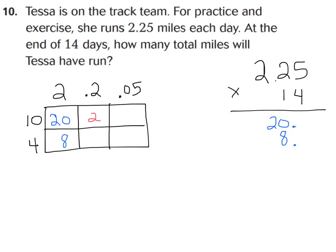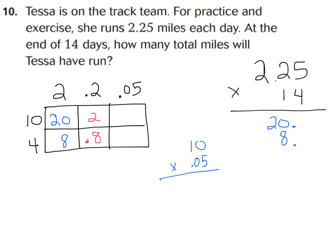Now let's multiply 4 times 2 tenths: 4 groups of 2 tenths gives 8 tenths. 4 times 2 is 8, and you have one spot to the right of the decimal, so write decimal point 8. Now 10 times 5 hundredths: 5 times 0 is 0, 5 times 1 is 5. I need 2 spots to the right of my decimal, so the product should be 50 hundredths. That makes sense — 10 groups of 5 hundredths is 50 hundredths. That answer is reasonable.